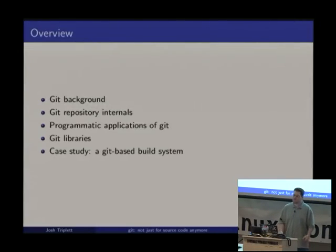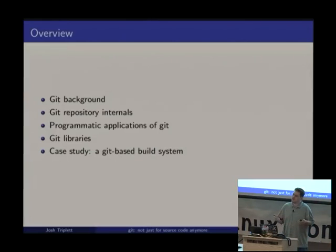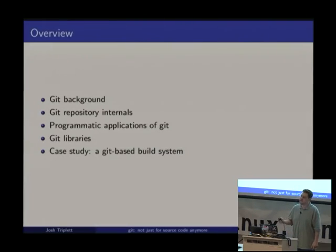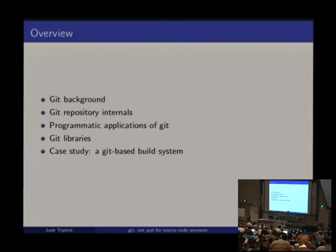The talk I'm giving today is a lot more about Git's history as a content-addressable file system than about its version control properties. I want to give background on Git and what pieces are more relevant for using it programmatically as a data store, dig into repository internals, look at existing programmatic applications of Git, examine Git libraries you can use, and go through a case study of a Git-based build system that I wrote.